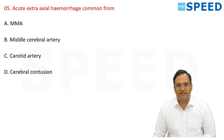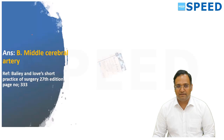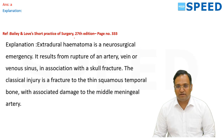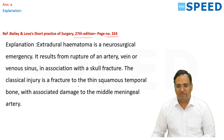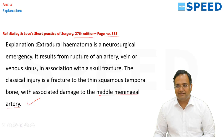Acute extra-axial hemorrhage is most commonly from the middle meningeal artery, which causes extradural hematoma. This is given in Bailey and Love 27th edition, page 333. Extradural hematoma results from rupture of an artery, vein, or venous sinus associated with skull fracture — classically a fracture of the squamous temporal bone with damage to the middle meningeal artery.